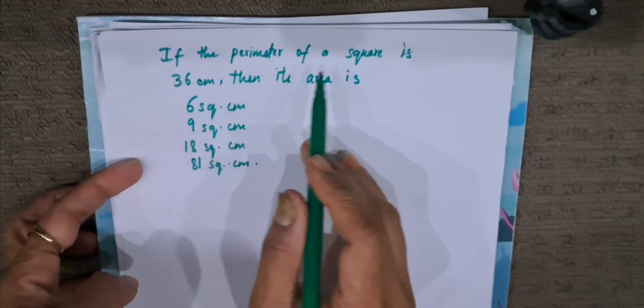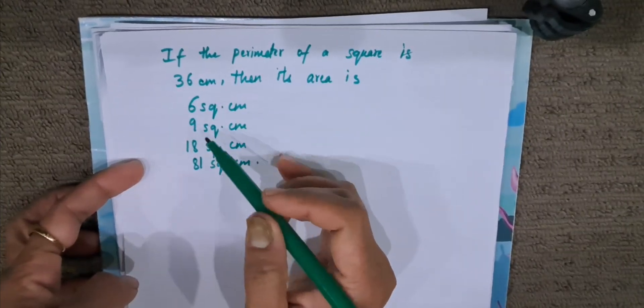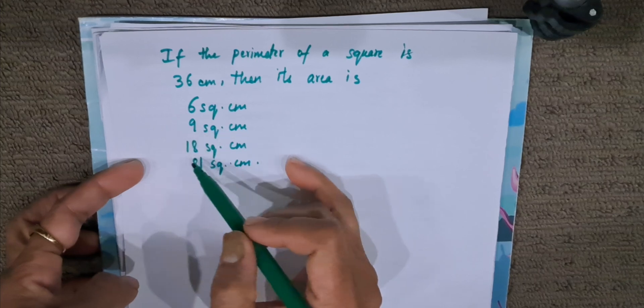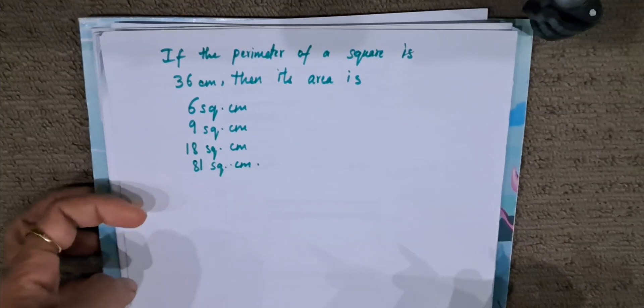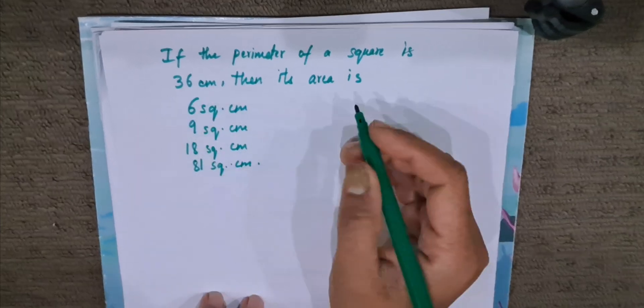If the perimeter of a square is 36 cm, then its area is—they have given 4 options: 6 square cm, 9 square cm, 18 square cm, or 81 square cm. So we have to find which is correct.